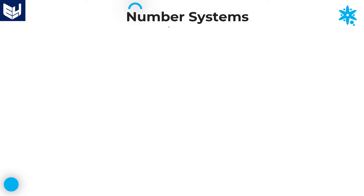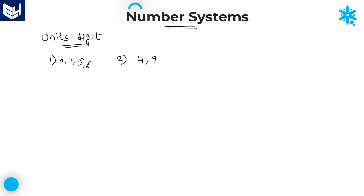Hi everyone, welcome to the session. In this session I am going to explain about the topic number systems. I will continue the concept related to units place digit. In the last two sessions I explained about the first category digits of units place digit — that is 0, 1, 5, 6. Now in this session I am going to explain about the concept if any number is ending with 4 or 9, which are the second category digits. Third category digits are 2, 3, 7, 8, which we will discuss in upcoming sessions.